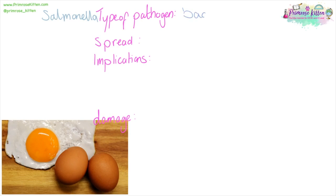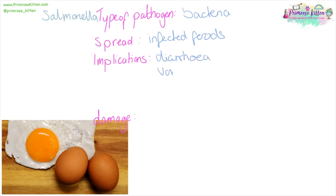Salmonella is caused by a bacteria. It's spread by eating infected foods, and it lives in the guts of farm animals. So infected foods are going to be things like eggs, meat, milk, or poultry. However, it's very, very rare in the UK — we have eggs with a little lion mark on them which means they are salmonella-free. The implications are diarrhea, stomach cramps, vomiting, and fever. Not very pleasant at all, and if severe dehydration sets in, it can be life-threatening.